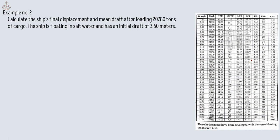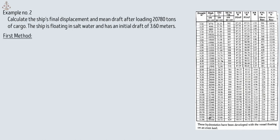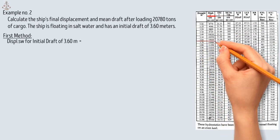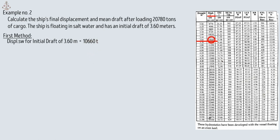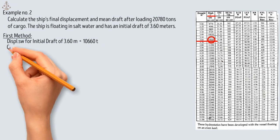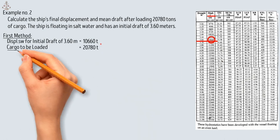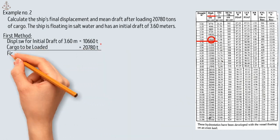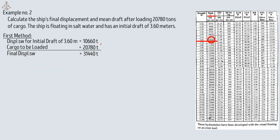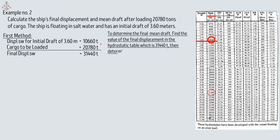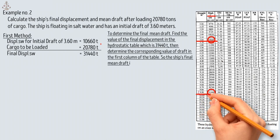We still need the hydrostatic table for this problem. The first method: extract the displacement in salt water for the initial draft of 3.60 meters, which is 10,660 tons. To find the final displacement, add the cargo of 20,780 tons to the initial displacement of 10,660 tons, giving a final displacement of 31,440 tons. Find 31,440 tons in the hydrostatic table — the corresponding final mean draft is 9.90 meters.